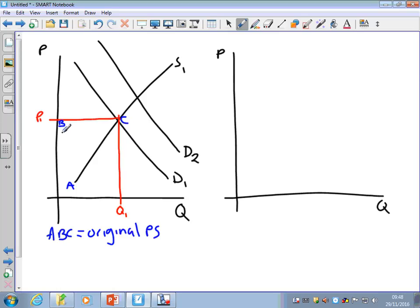With this demand increase, we can see that the firm will earn more revenue. This full box here will show me the revenue, but look what's happened now. They still earn A, B, C producer surplus, but they now earn all the way up to D and F. So their new producer surplus is A, E, F.